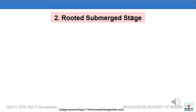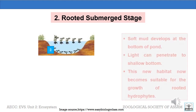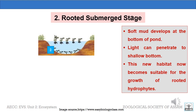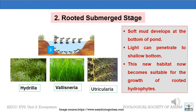The second stage is the rooted submerged stage. As a result of death and decomposition of phytoplankton and zooplankton, a soft mud develops at the bottom. As the bottom becomes shallow, light can penetrate, and this new habitat now becomes suitable for the growth of rooted hydrophytes like hydrilla, vallisneria, utricularia, etc.